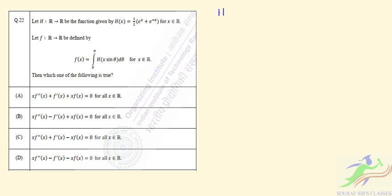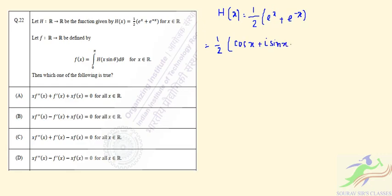Here we have h(x). We can simplify it using Euler's identity. We can write: half of (e^(ix) + e^(-ix)) = half of [(cos x + i sin x) + (cos x minus i sin x)]. So h(x) = cos(x).